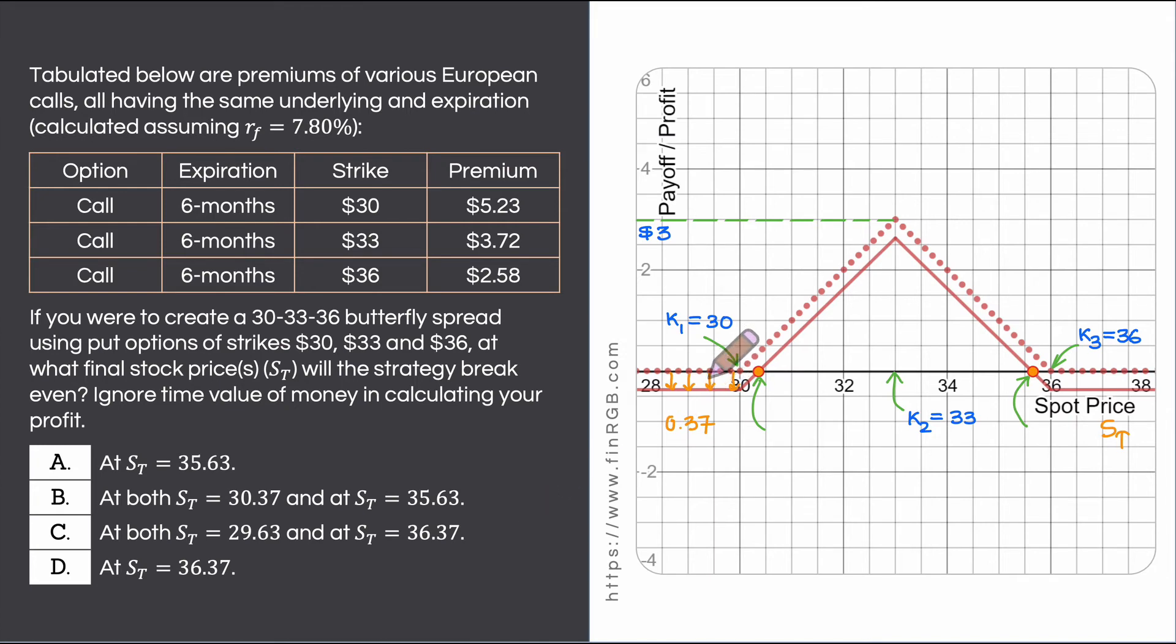This vertical distance is 0.37. Now, please note that this line has a slope of 1. This line is tilted at a 45 degree angle. When I say the slope is 1 it means that for every 1 dollar change in S t the line it rises by 1 dollar.